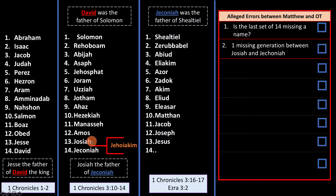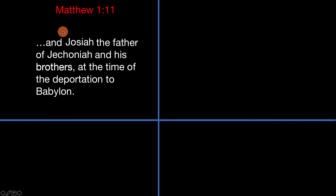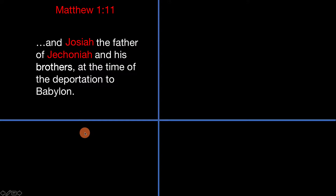Let's begin with the first issue of Josiah and Jeconiah — why has Matthew skipped Jehoiakim? In Matthew 1:11 we read: 'And Josiah, the father of Jeconiah, and his brothers at the time of the deportation to Babylon.' So in Matthew 1:11, we're clearly told that Josiah is the father of Jeconiah.